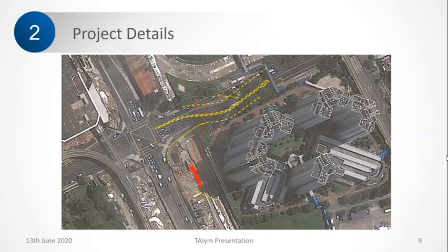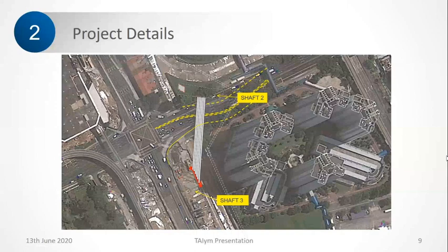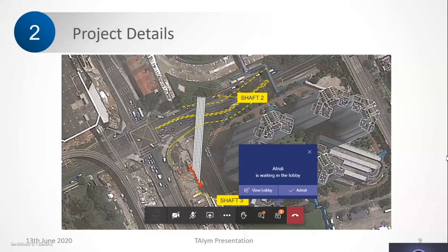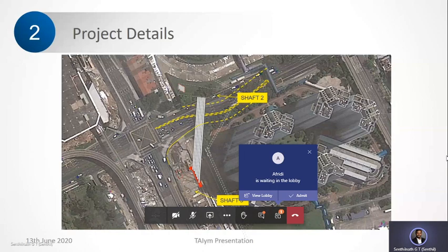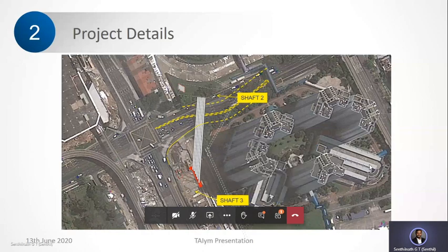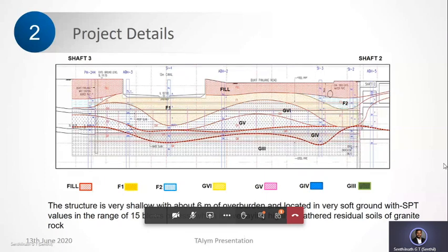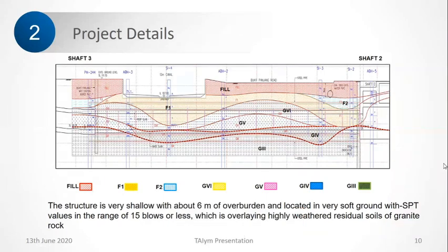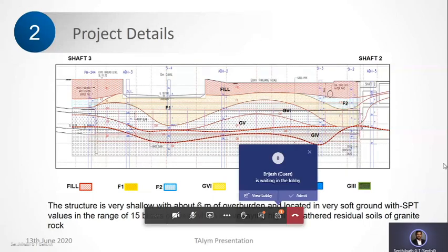The first stage of any excavation is to install the pipe roofs. After the pipe roofs are installed, in some cases wall roofs will also be installed. The next stage will be excavation of the face. Before going to that, I will show the geological condition of this site.